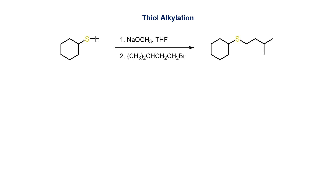Since thiols are more acidic than alcohols, they are easily deprotonated by alkoxide bases to give thiolate anions. These nucleophiles are then alkylated by the addition of an electrophile to produce a sulfide.